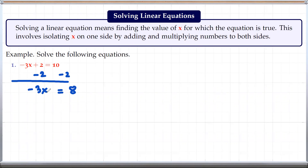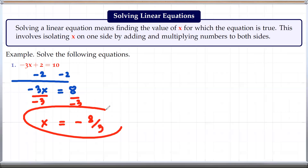So we have just negative 3x on the left side now, but our goal is to have just x on the left side. For that, we can divide both sides by negative 3. If we divide both sides by negative 3, the left side becomes just x, and the right side is negative 8 by 3. So this is the solution — the value of x must be negative 8 by 3.